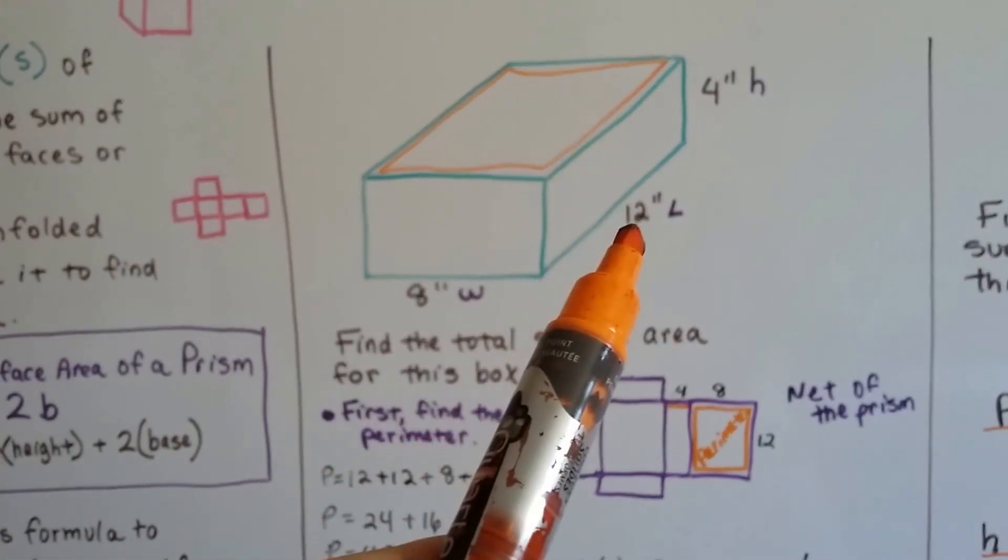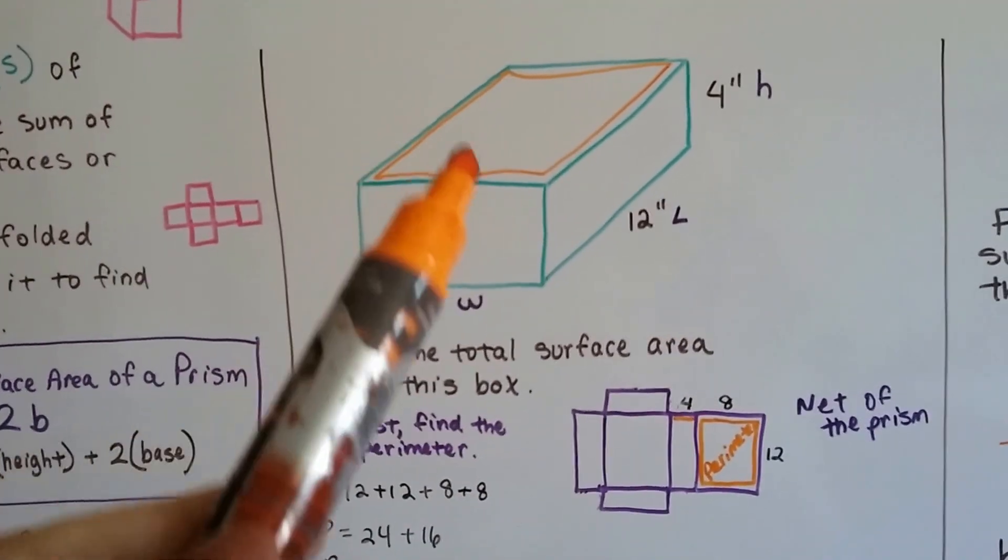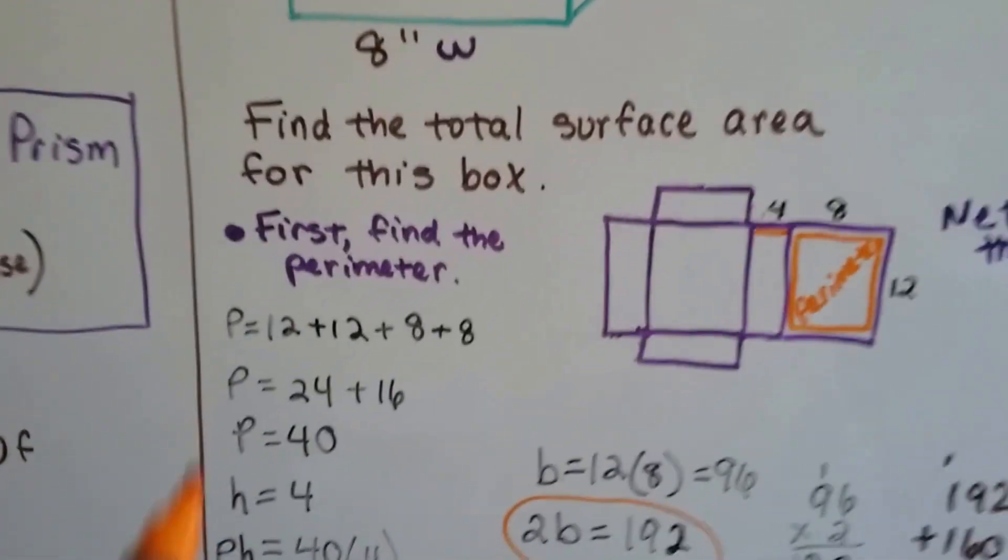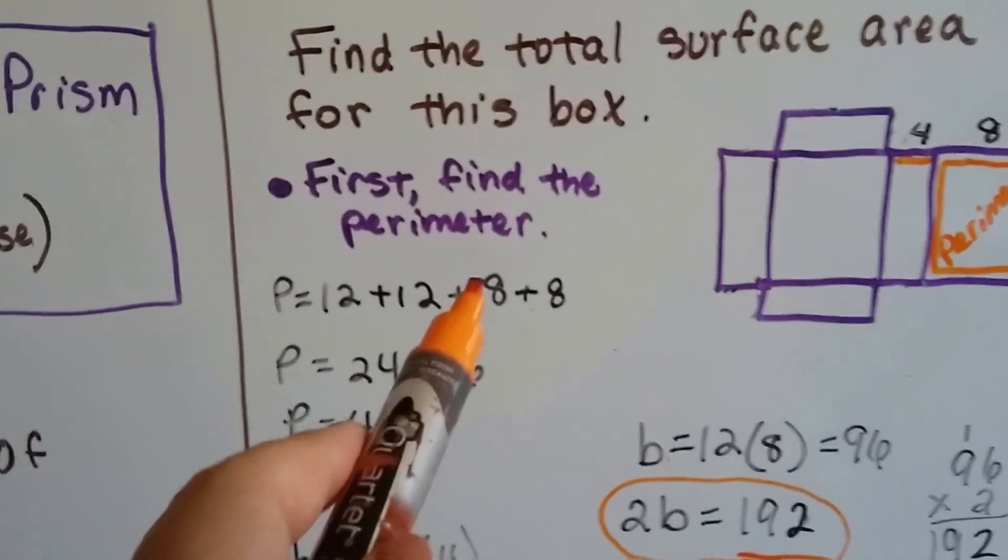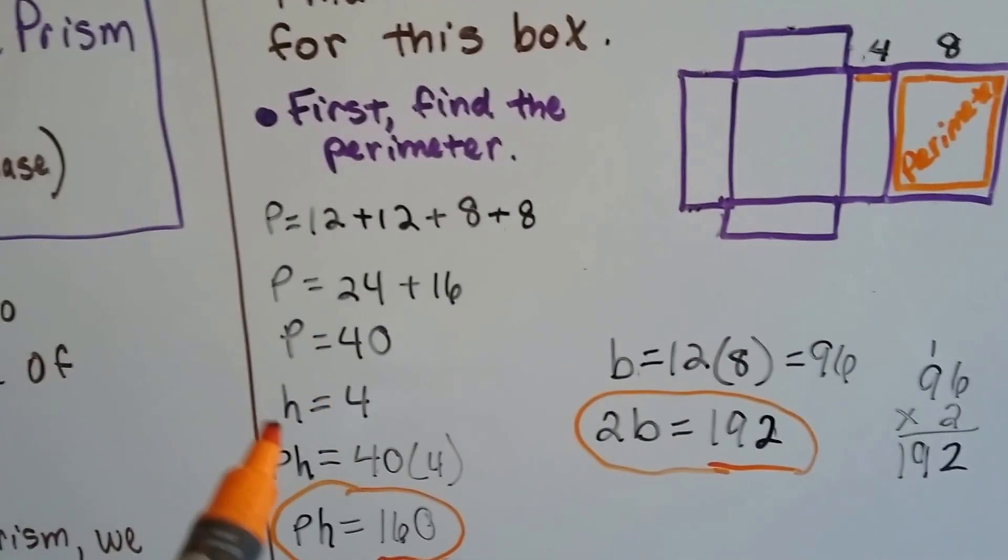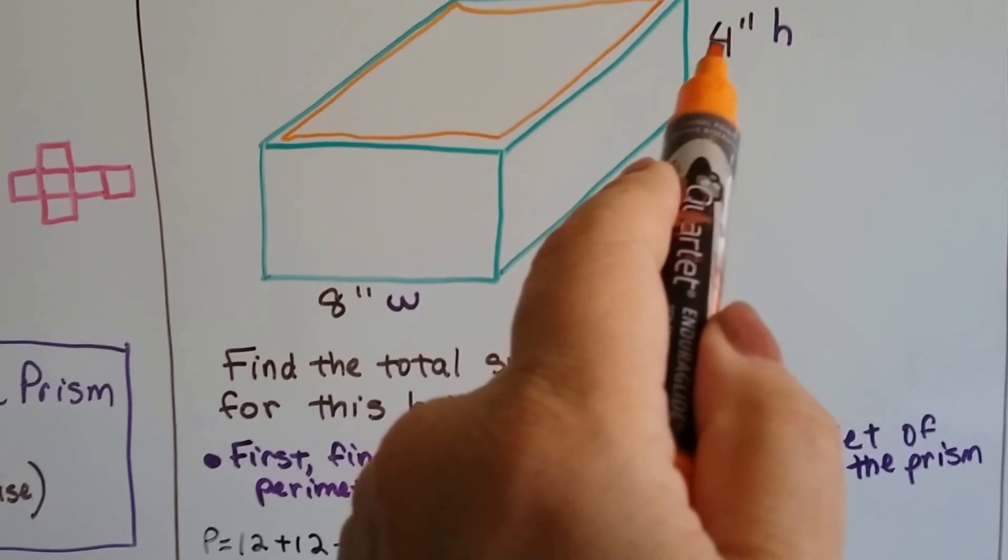It's 12 inches, and 8 inches on this side, so 12 plus 12 plus 8 plus 8 is going to give us our perimeter. 12 plus 12 is 24, 8 plus 8 is 16, 24 and 16 is 40. Now, we need to multiply that by the height, and the height is 4.